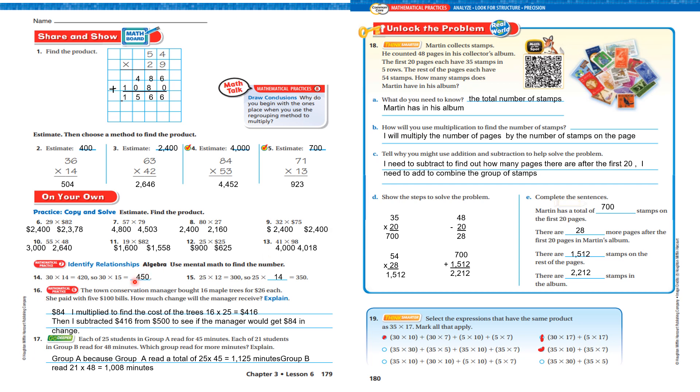Let's look at number 16. The town's conservation management bought 16 maple trees for $26. She paid with five $100 bills. How much change will she receive? She's going to receive $84. I multiplied to find the cost of the tree, 16 times 25, which is $416. Then I subtracted $416 from $500 to see if the manager would get $84 in change, and she did.